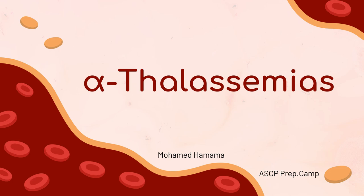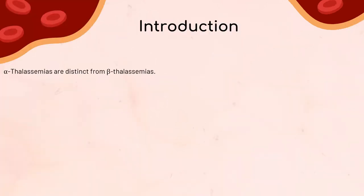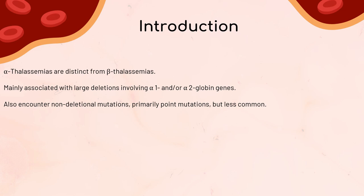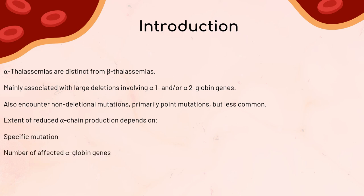In our last episode, we explored beta-thalassemias, where the beta-globin gene cluster is often affected by point mutations. But in alpha-thalassemias, it's a different story. They're mainly associated with large deletions involving the alpha-1 and/or alpha-2 globin genes. We also encounter non-deletional mutations, mostly point mutations, but they are less common. The extent of reduced production of the alpha chain depends on the specific mutation, the number of affected alpha-globin genes, and whether the affected gene is alpha-2 or alpha-1.